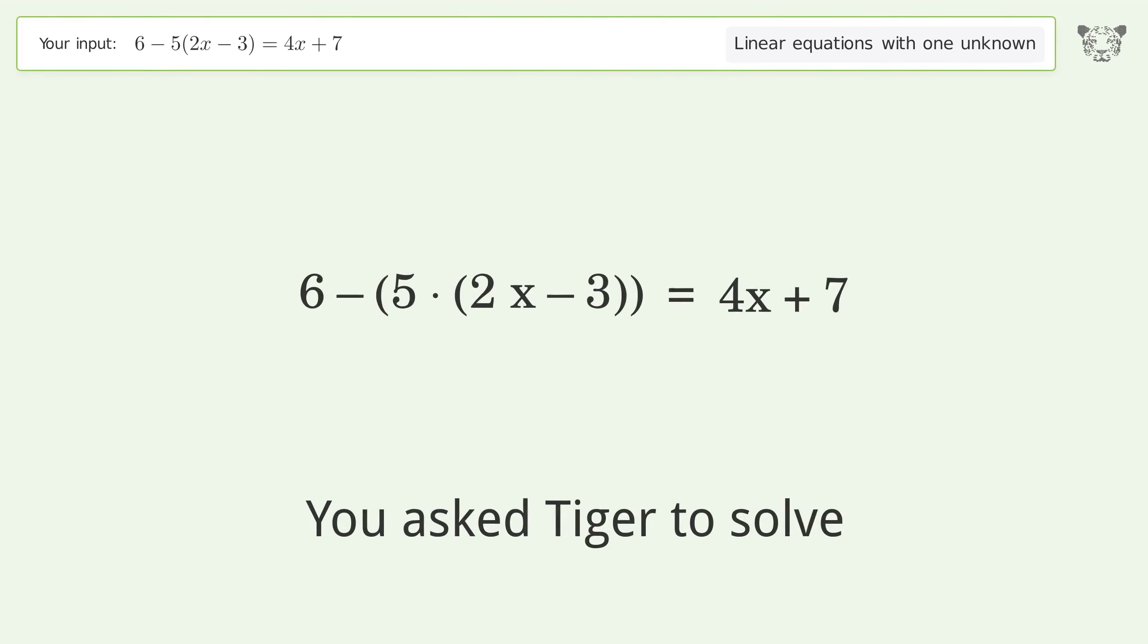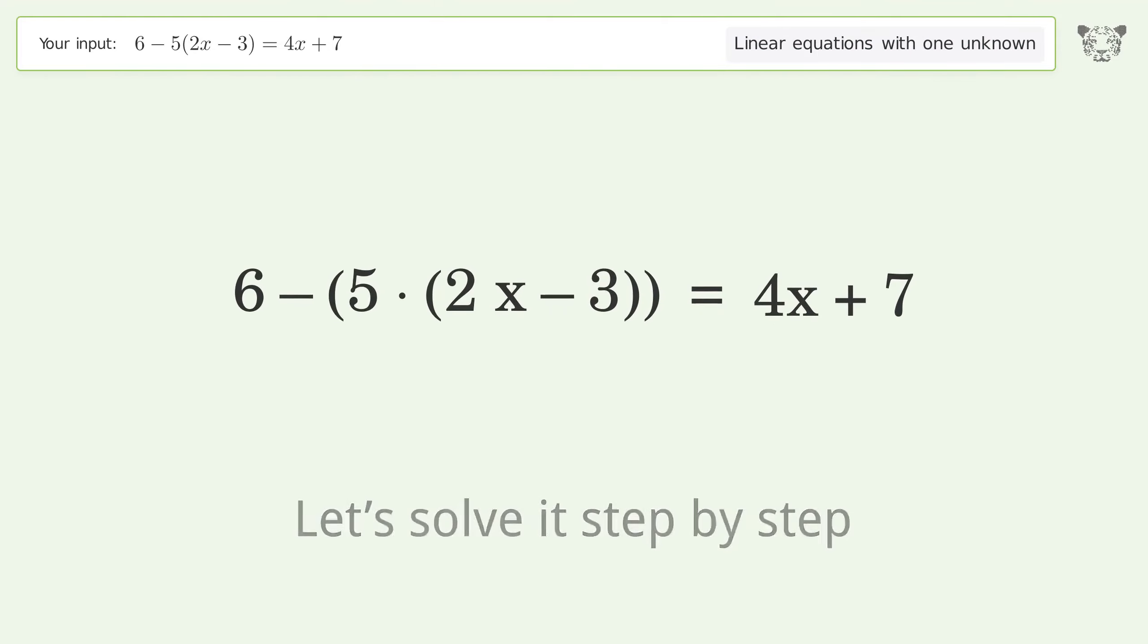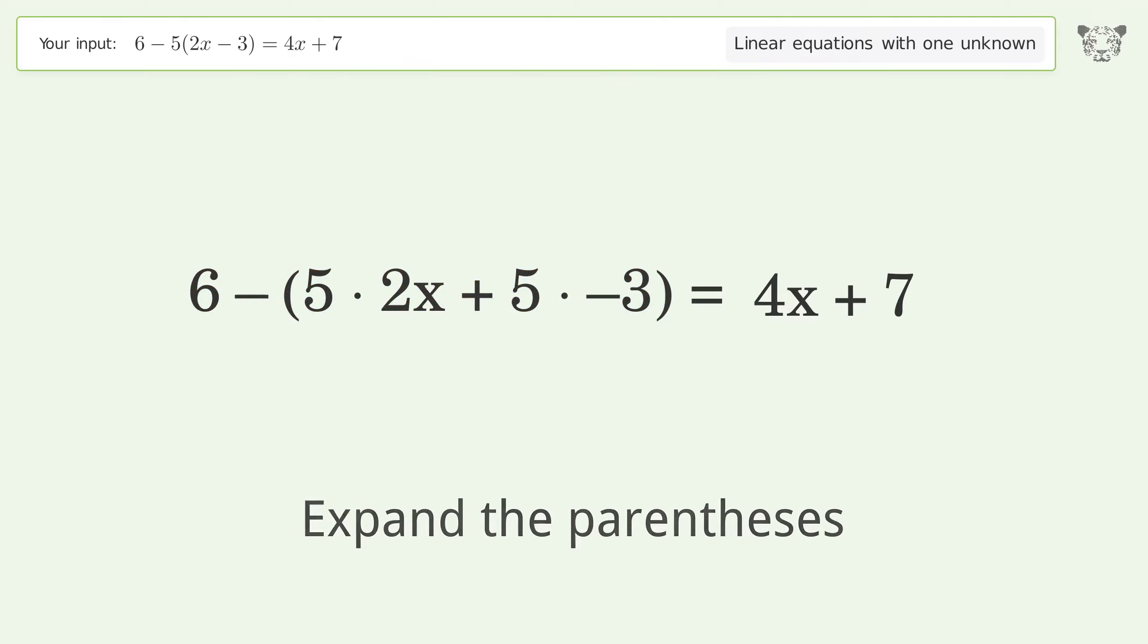You ask Tiger to solve this. It deals with linear equations with one unknown. The final result is x equals 1. Let's solve it step by step. Simplify the expression, expand the parentheses, multiply the coefficients, simplify the arithmetic.